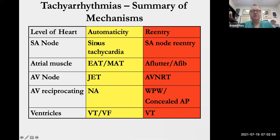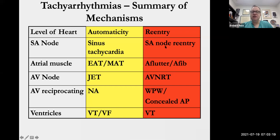At the level of the SA node, when we think about automatic arrhythmias, we're talking about sinus tachycardia. At the level of the SA node, there is actually a condition called SA nodal re-entrant tachycardia, which stops and starts abruptly but has a P wave morphology that is exactly the same as sinus. On the surface electrocardiogram, if you didn't see the stop and start, you would not realize this is a re-entry. It's an unusual arrhythmia, but I have seen it maybe two or three times.